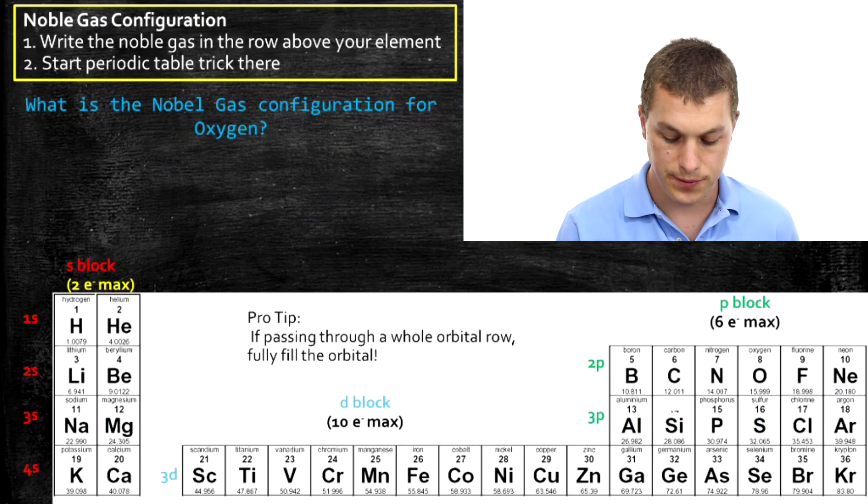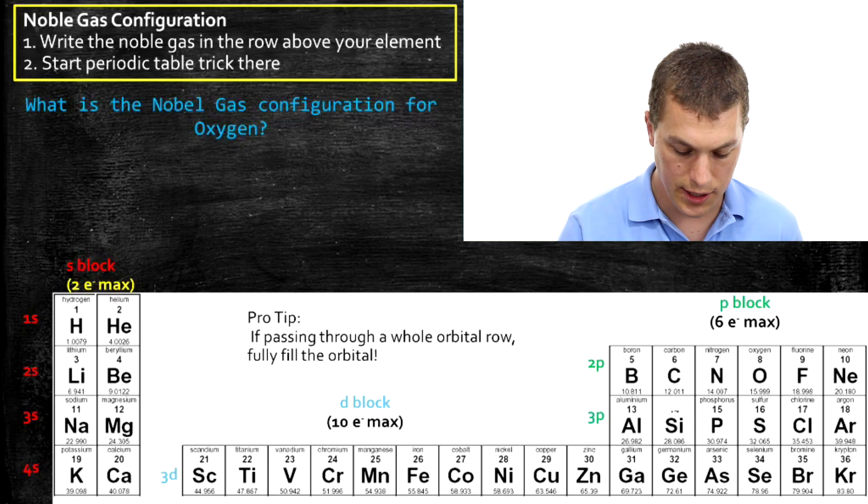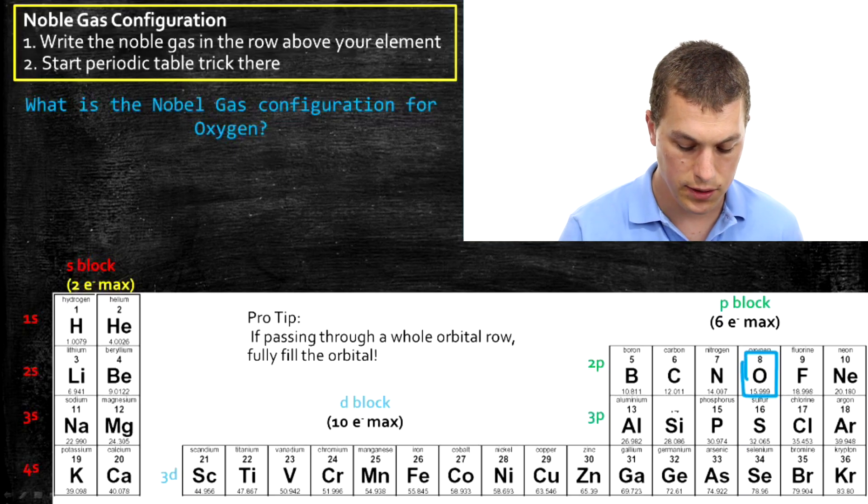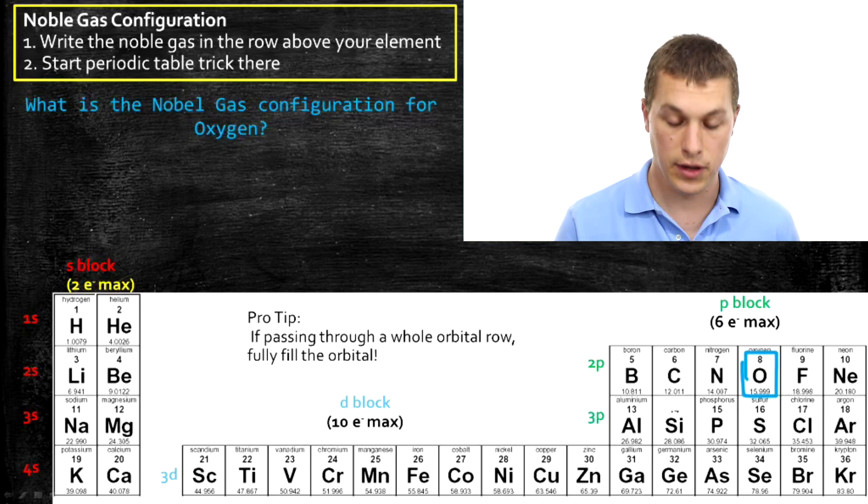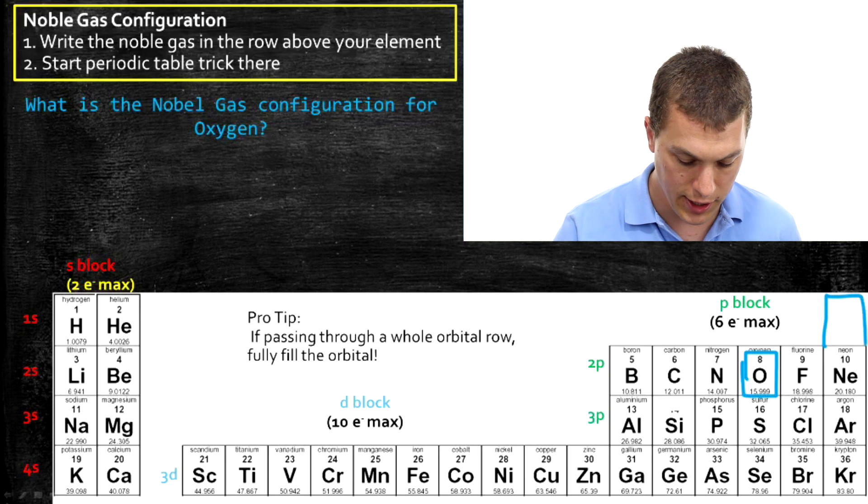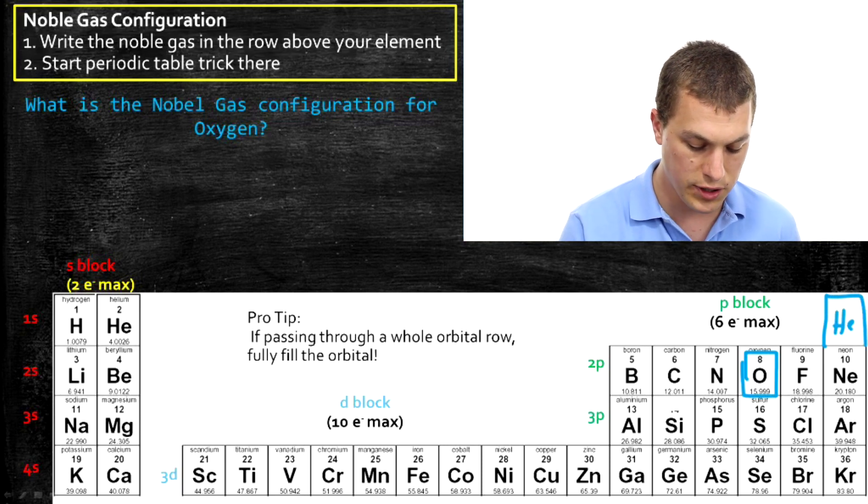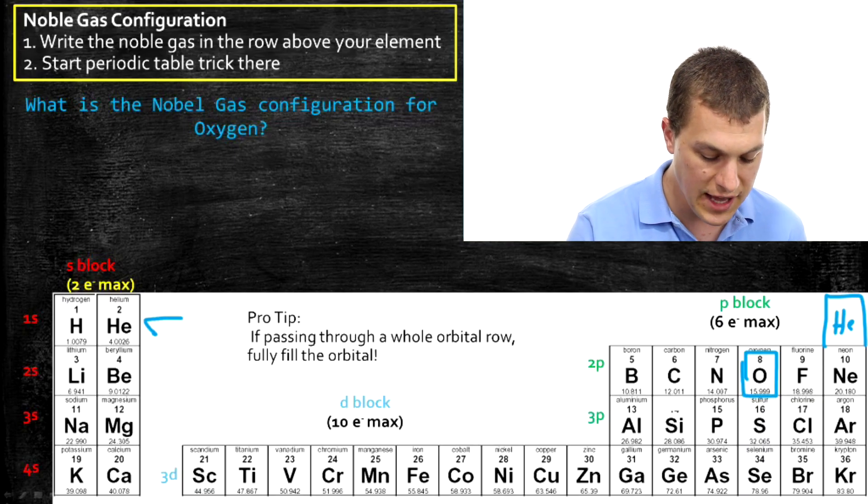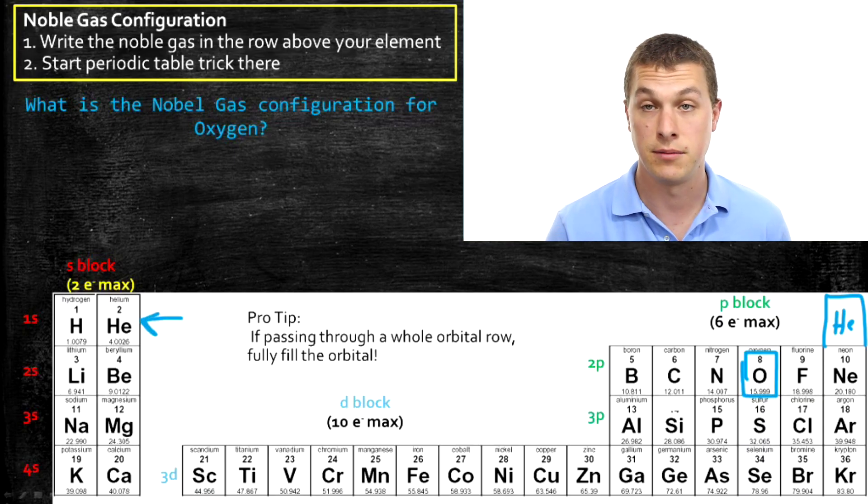Here we want to write oxygen. So oxygen's right here, over at element number 8. And we want to know what noble gas is just above it. Well, helium's just above it. And helium's a noble gas. So usually we see helium right here. Now, helium's technically a part of the S block, which is why I've grouped it way over here.